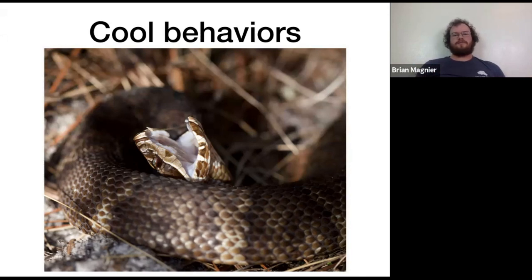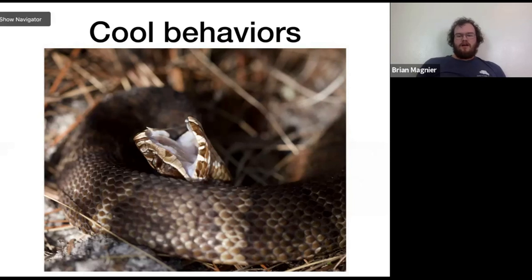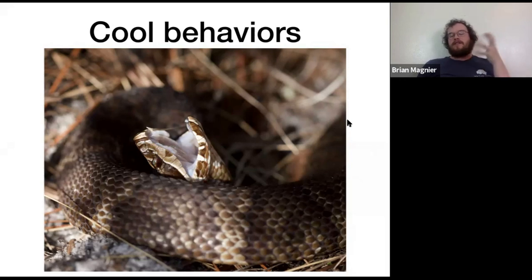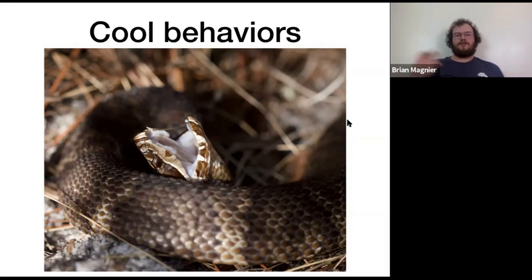That's most of the snakes you'll probably run across in Florida — there are over a dozen more species that are generally rarer. Now we're going to move on to some of the cool behaviors. Here's the cottonmouth again — here's why it's called the cottonmouth: its mouth is lined with bright white. When threatened, the cottonmouth opens its mouth revealing that bright white interior, probably meant as a threat display similar to the rattlesnake's rattle — basically saying 'don't step on me, don't eat me, I'm venomous. I can hurt you if you attack me.'